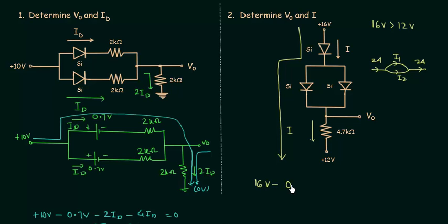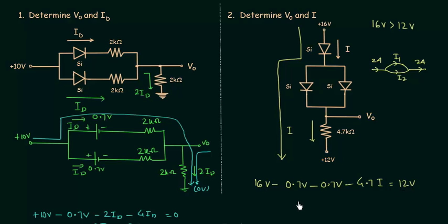From 16V we subtract 0.7V for the first diode, then minus 0.7V for the second diode, then 4.7I equals 12V. Solving this gives I equal to 0.55mA.